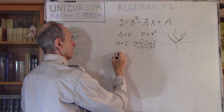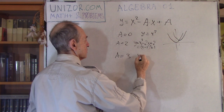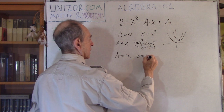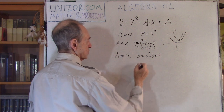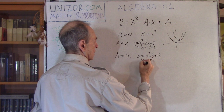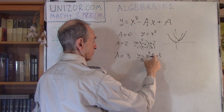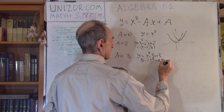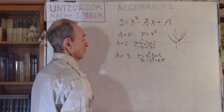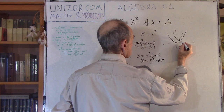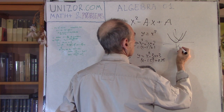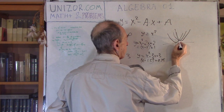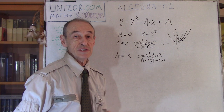Let's take another parabola — a equal to 3. So we have y equal to x squared minus 3x plus 3, which is (x minus 1.5) squared plus 0.75, meaning it's shifted 1.5 to the right and 0.75 up. What's interesting is that this is a point which is kind of common to these three parabolas.